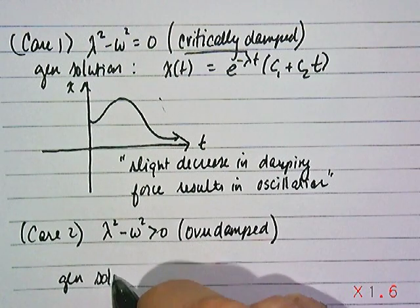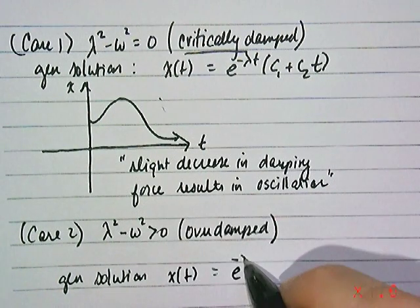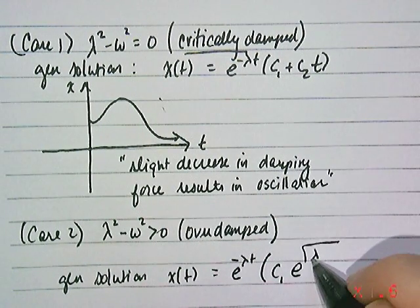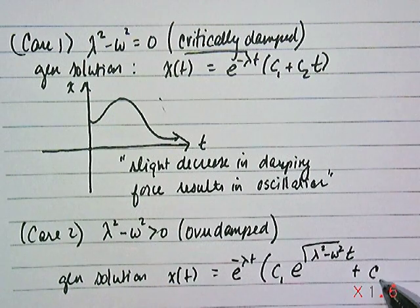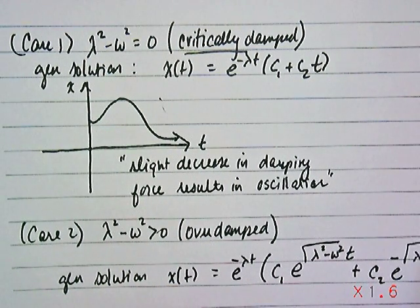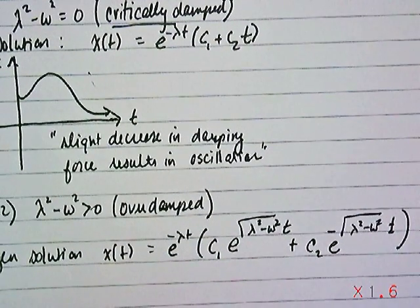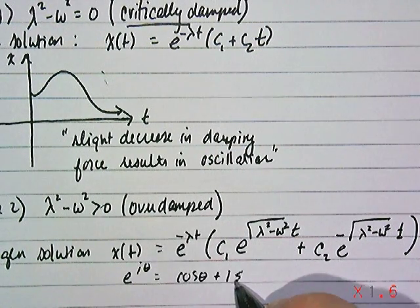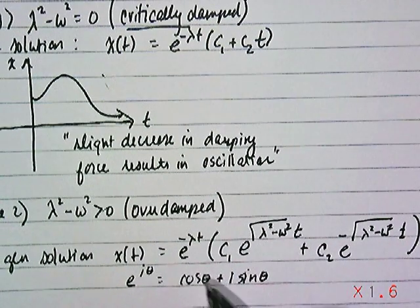In this case, you have two real roots, so the general solution is going to be x(t) = e^(-λt) times the quantity c₁e^(√(λ²-ω²)t) plus c₂e^(-√(λ²-ω²)t). That's what the solution will look like because you'll have two different roots. Keep in mind, we could write this in terms of sines and cosines, because remember from Euler's formula, e^(iθ) is cosine θ plus i sine θ.